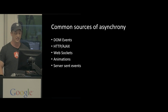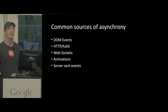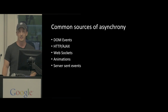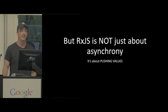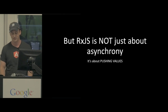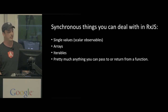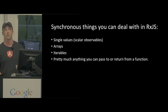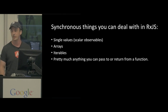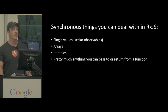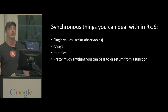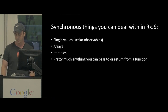Common sources of asynchrony include DOM events, HTTP AJAX, WebSockets, animation, service worker events - this is not an exhaustive list. But it's not just about asynchrony - it's about pushing values. You can push a value through a function synchronously. Synchronous things you can deal with in RxJS include single values (often called scalar observables), arrays, iterables - pretty much anything you can pass to a function or get back from a function, you can wrap in an observable and subscribe to it.